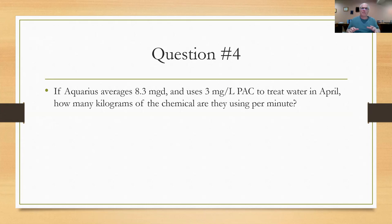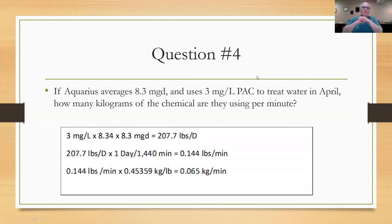The way I set this up was this way. With the standard formula up there for 3 milligrams per liter at 8.34 pounds per million gallon for every 1 milligram per liter times the flow rate of 8.3 MGD, I come up with a usage of 207.7 pounds per day. If I take that 207.7 pounds per day and divide it by 1440 minutes, I would get 0.144 pounds per minute. I take the 0.144 pounds per minute, multiply by 0.4359 kilograms per pound, I come up with 0.065 kilograms per minute. Hope you got that right. If you did, you've gotten four out of the five correct already. You've got an 80%, you passed. Let's try the last one. It's a little bit more difficult, a little bit more involved. In fact, I needed two slides to do this one.